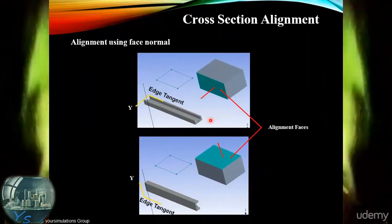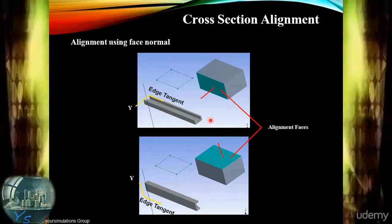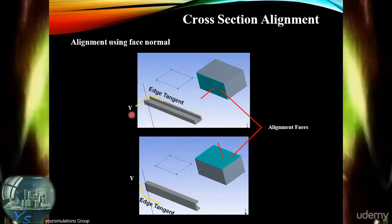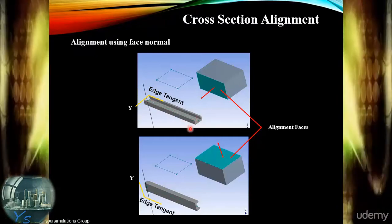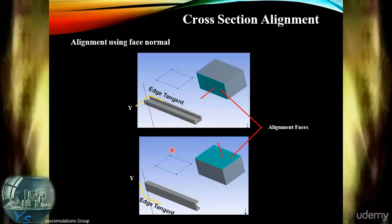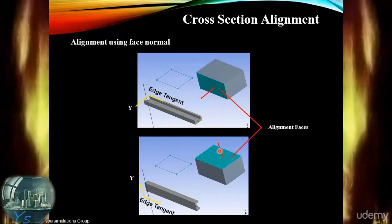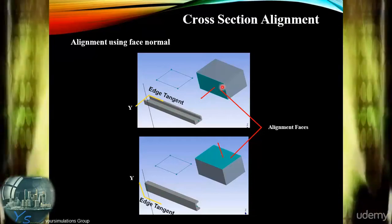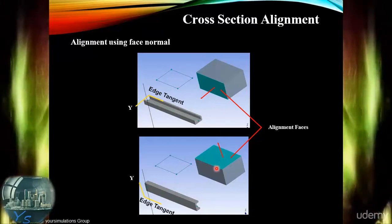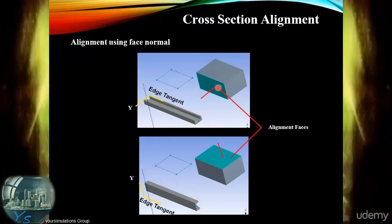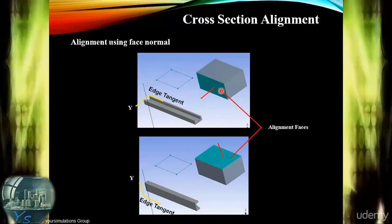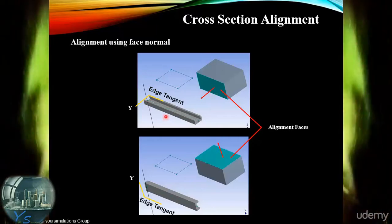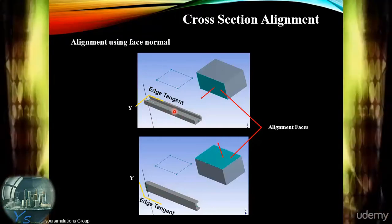In addition to lines and axes, we can also use face normals. Here is an example with a channel cross-section shown in two different positions by virtue of different face normals selected. Different faces on an adjacent solid — one at the side and one at the top — have 90-degree different face normals, and we can use these face normals to provide a vector for realignment of the cross-section.